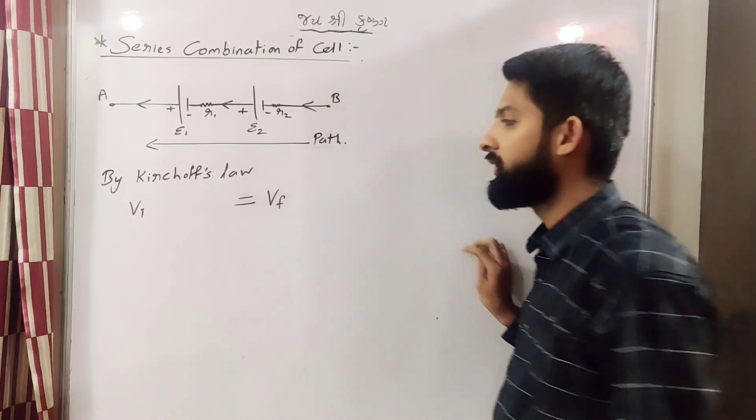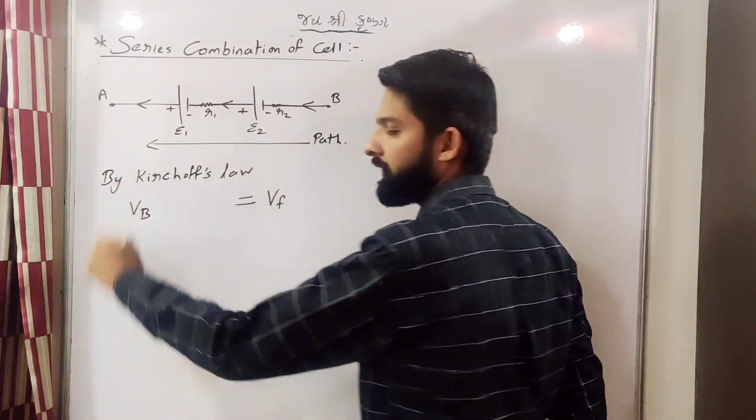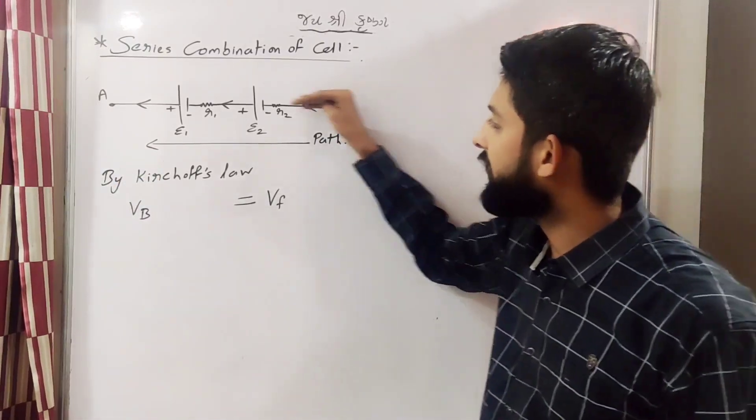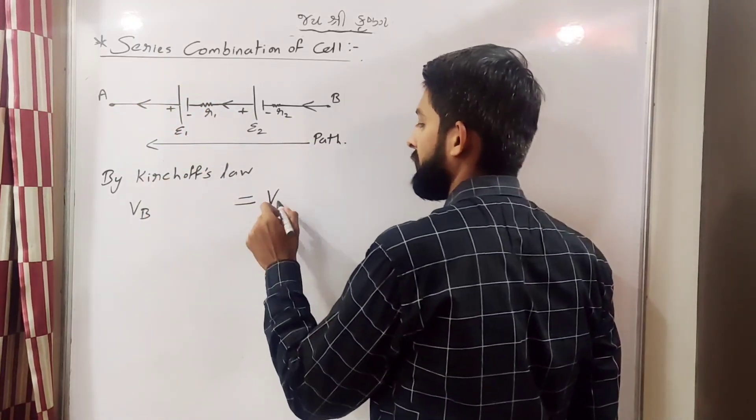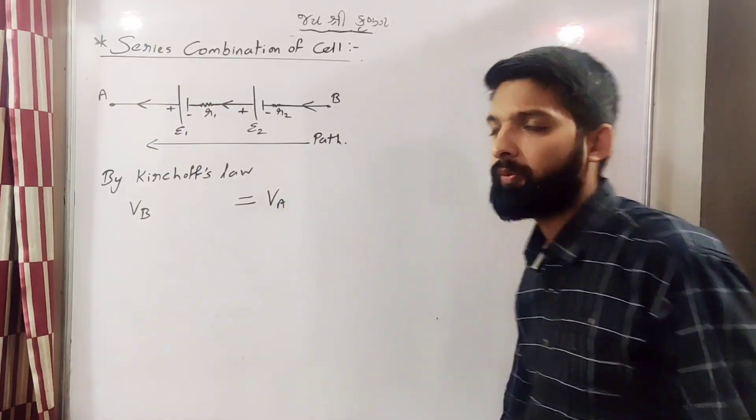So starting point yaha pehle kya hai B. So initial point is our B, aur yahaan se yahaan tak hum jayenge. Final point will be A, so yaha pehle hoga A, okay.